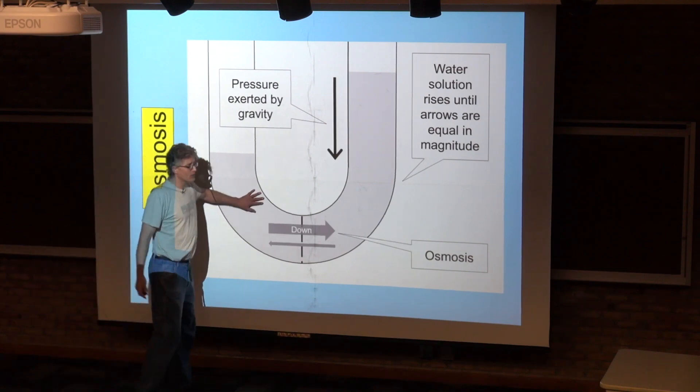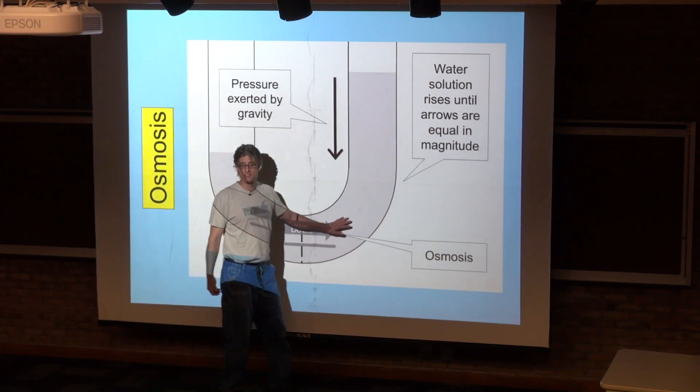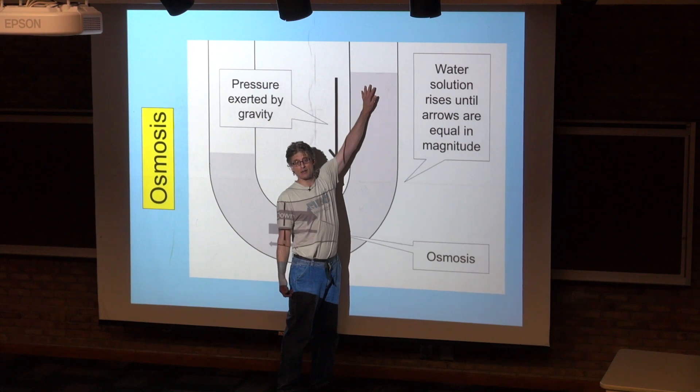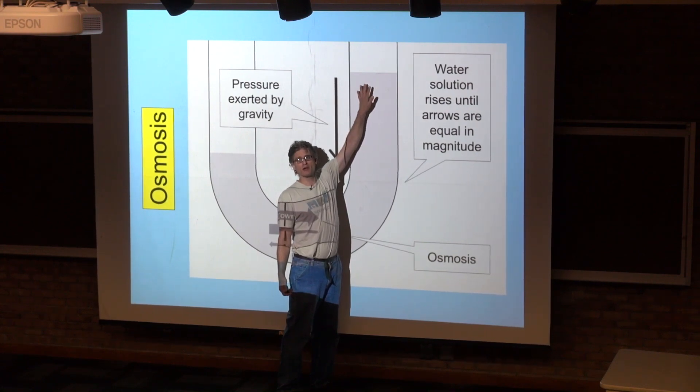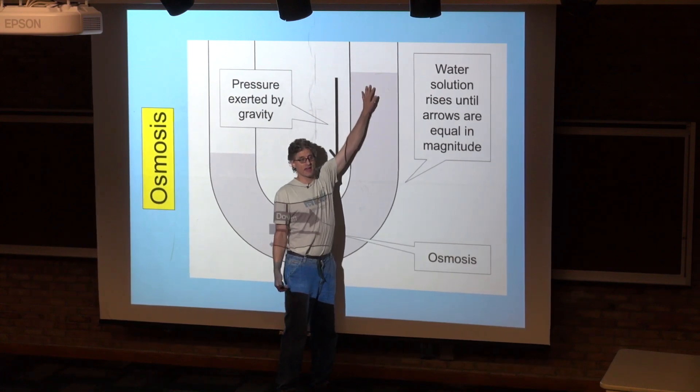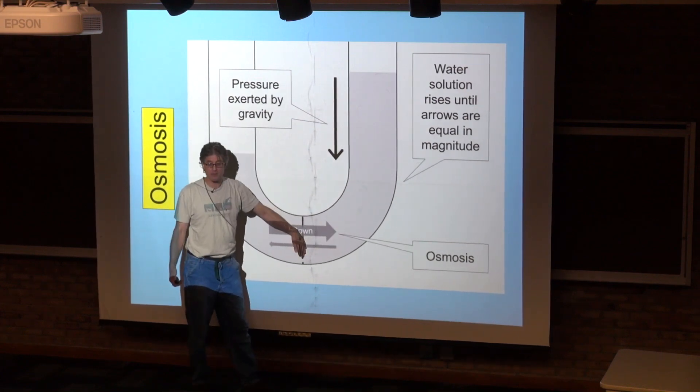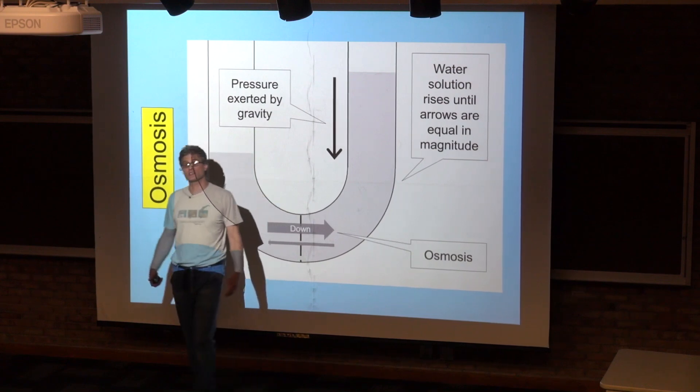But if you've got the water in one of these tubes, as the water flows from one side to another, it's going to push the water on this side up, quite literally, against gravity. At some point there's going to be so much water on this side that the pressure of the water from gravity on the membrane is going to push water in this direction as fast as it goes in the other direction.